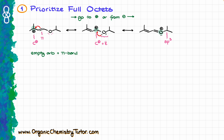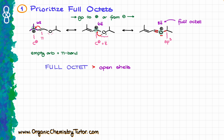Carbocations are sp2 hybridized species with only six electrons around the carbon — two electrons on each of the three bonds and an empty orbital. Whenever you see a carbocation, it is always going to be an open shell. So our first and second contributors are open shells. However, our last contributor is different: the oxygen has one electron pair plus three bonds, giving eight electrons total, which constitutes the full octet.